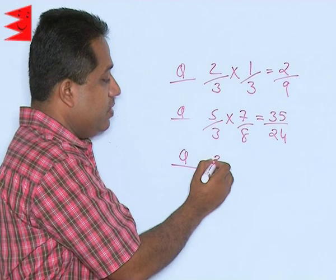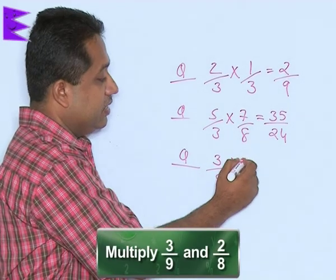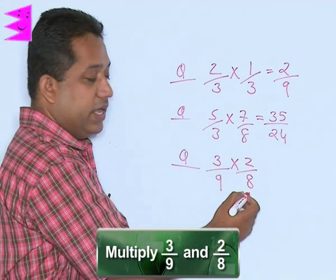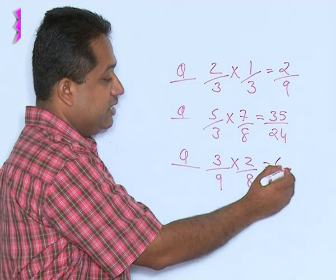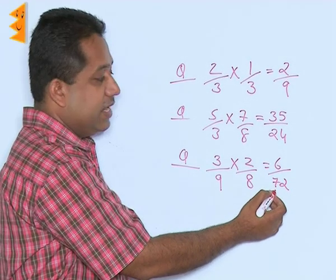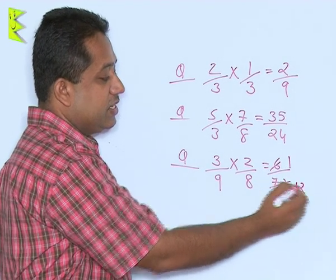However, there may be a question where you will have to simplify the answer. That is, let us say we are having a question like this: 3 by 9 into 2 by 8. This is going to be 6 upon 72 and here we find that 6 and 72 can be cancelled. So, I can say 6 1s are 6 and 6 12s are 72.